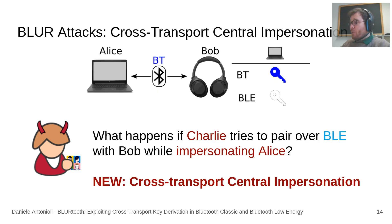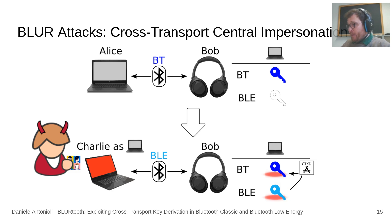Let's describe the central impersonation attack in more detail. We target two paired devices running a secure session over BT or BLE. Since the victims support CTKD, they are always pairable over BT and BLE — and this is an issue, as the attacker can try to pair on the transport currently not in use. In this example, the victims are running a secure session over BT. If Charlie tries to pair over BLE with Bob while impersonating Alice, Charlie and Bob complete BLE pairing, agree on K_BLE, and derive K_BT via CTKD. As a result, Charlie fools Bob into writing a malicious BT key for Alice or overwriting Alice's BT key, so Alice cannot connect back to Bob. This attack is cross-transport because Charlie affects K_BT without sending a single BT packet.